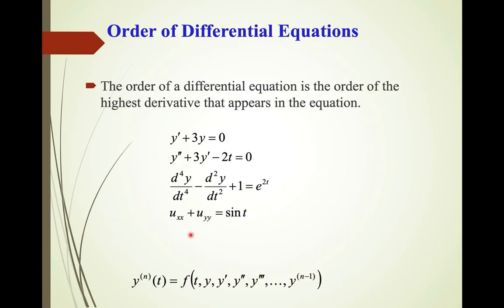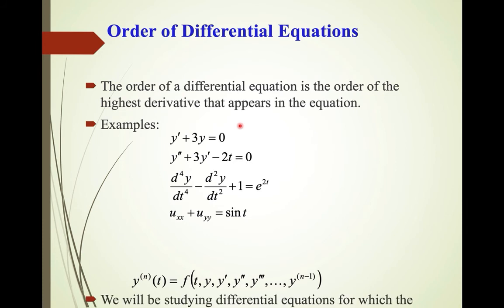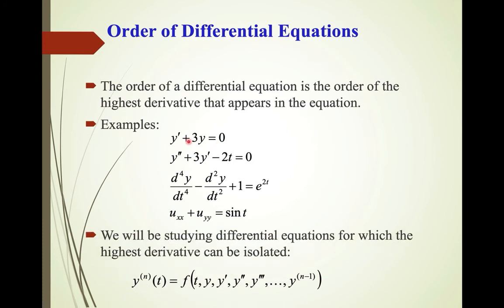What is the order of a differential equation? It is the order of the highest derivative appearing in the equation. For example, one equation shown is first order, another is second order, and another has a highest derivative of fourth order, making it a fourth-order equation. For partial differential equations, U_xx means second order, and similarly another term shown is also second order.